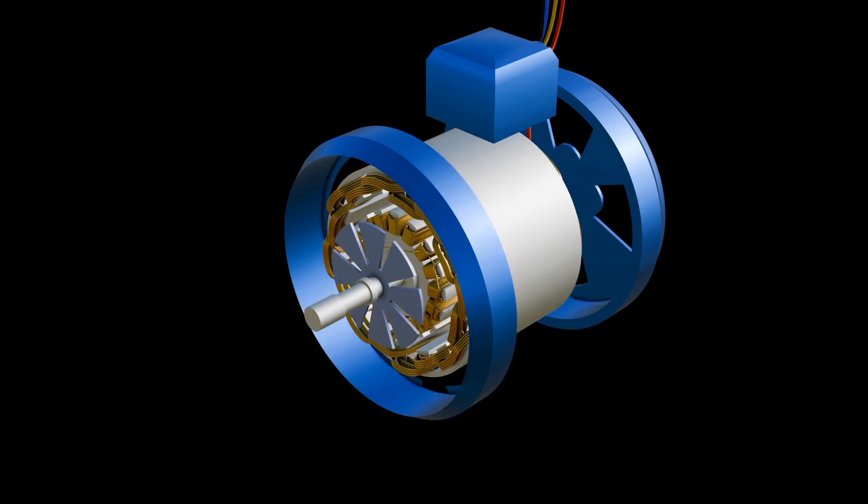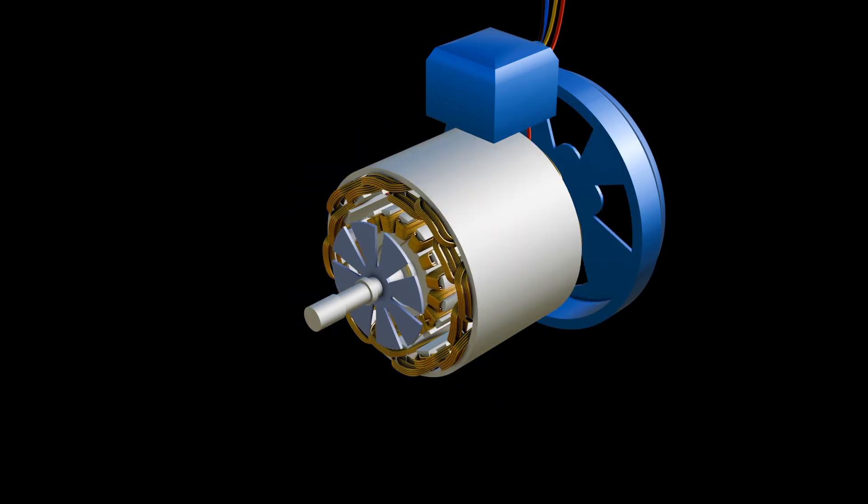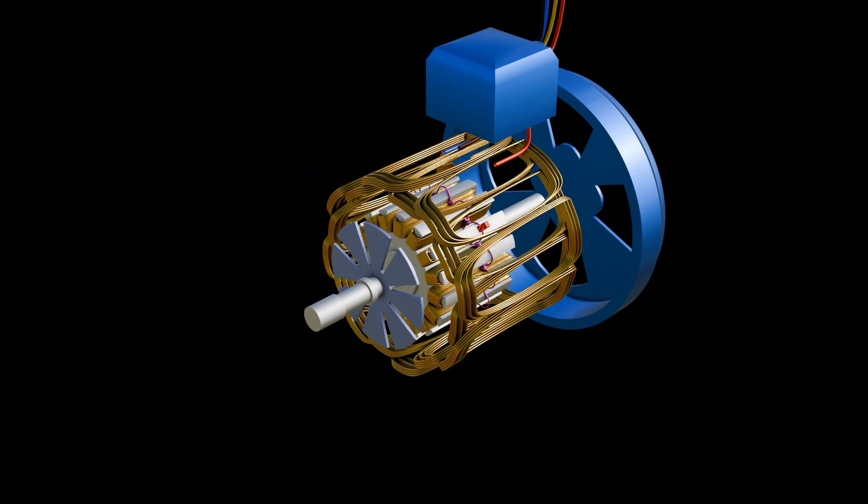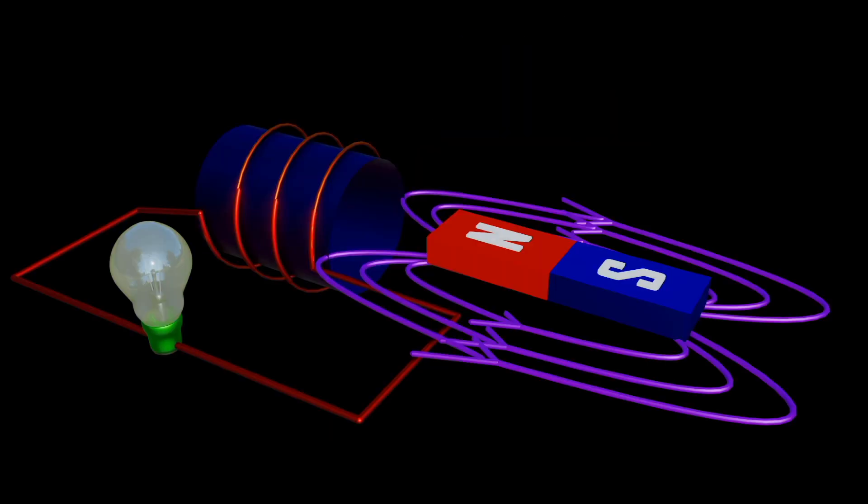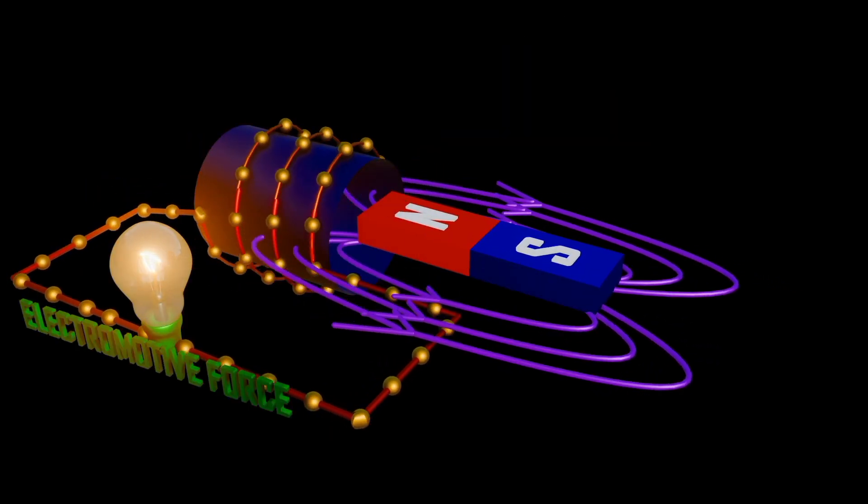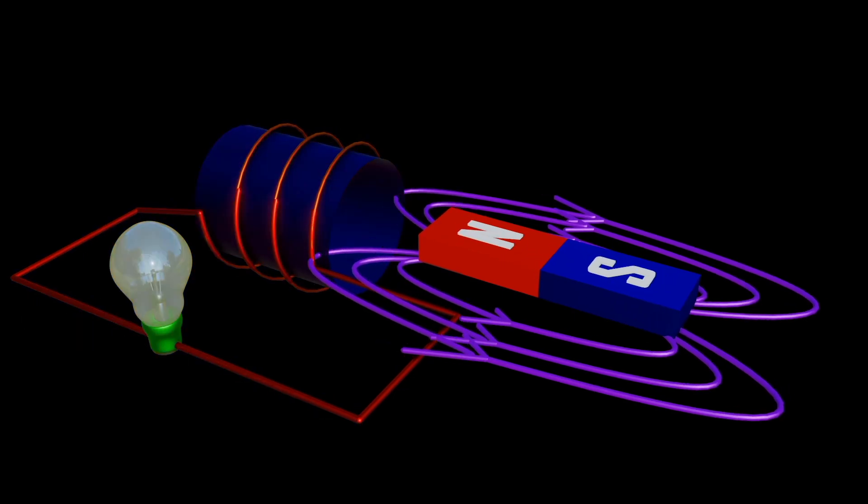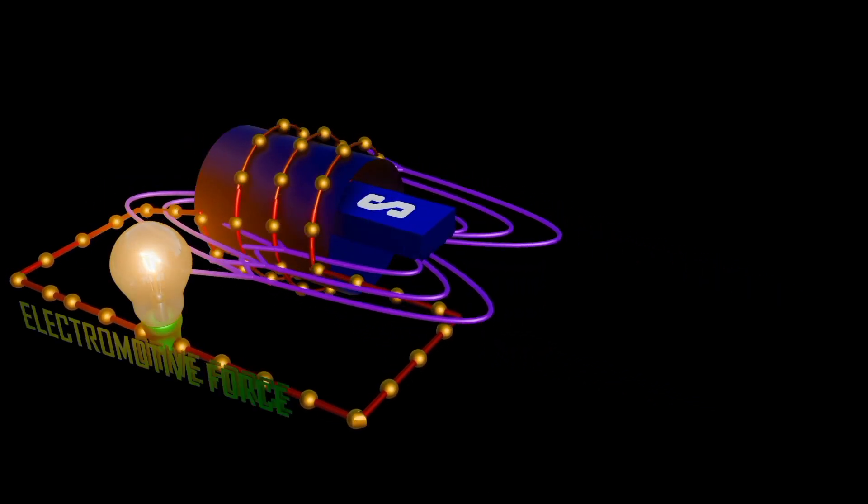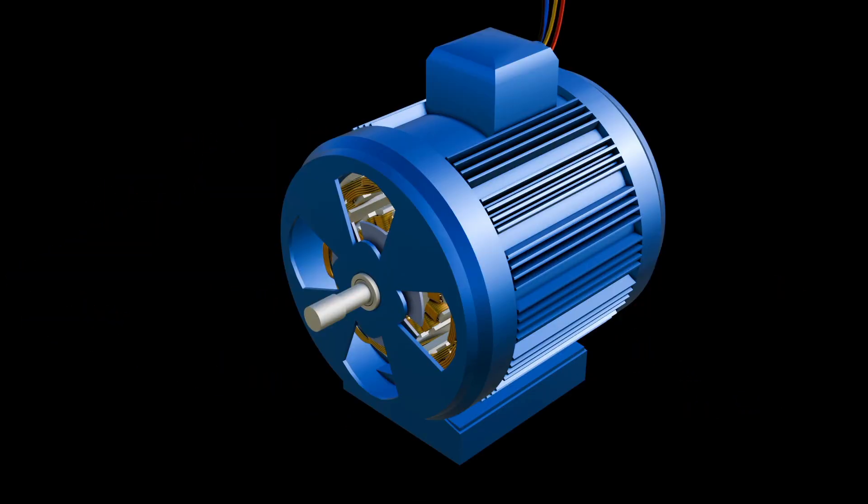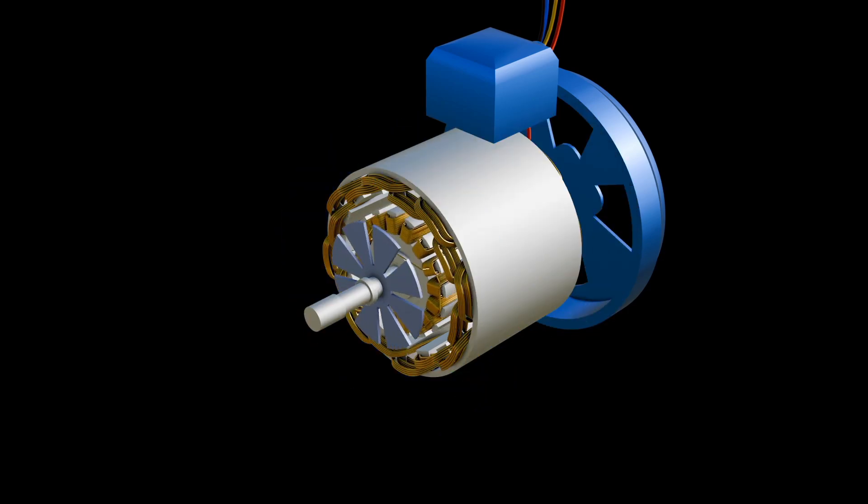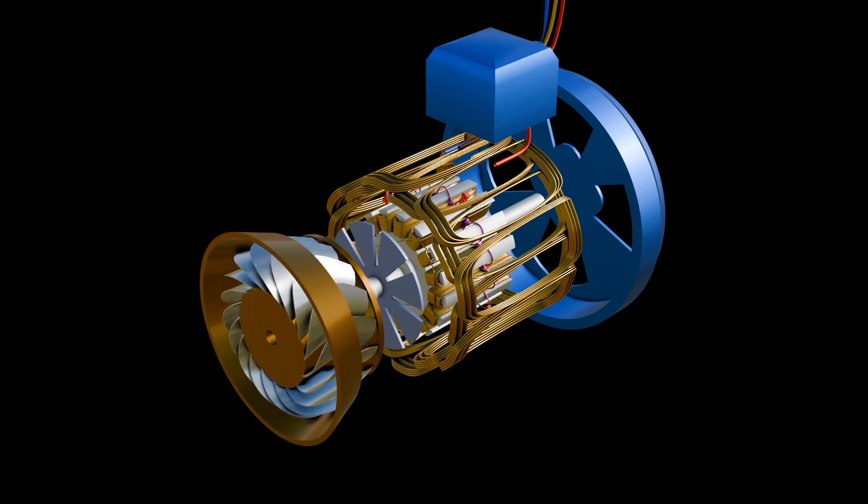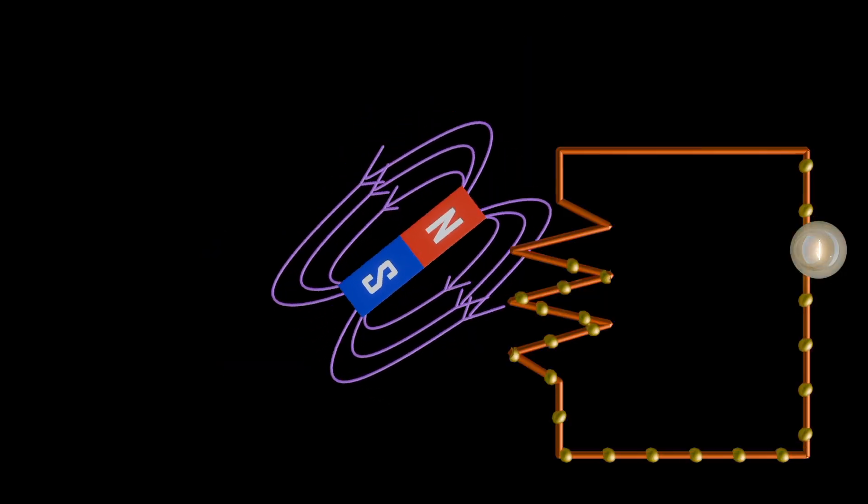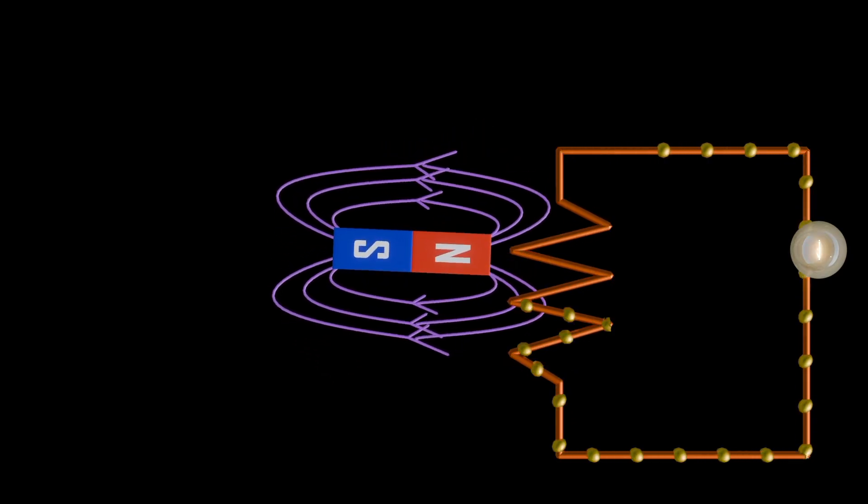Alternators or generators work like motors but in reverse. They work based on Faraday's law of electromagnetic induction, which states that current is induced in a conductor inside a magnetic field when there is relative motion between that conductor and magnetic field. Typically, a rotor with induced magnetic fields rotates inside stationary conductor coils. The fields cut across the stator conductors, generating an induced electromotive force. But first, let's understand the concept of electricity.